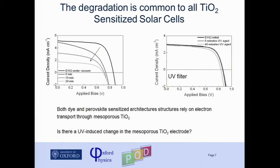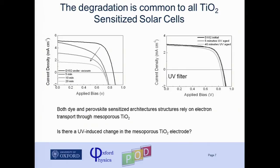We then tried the same experiment on normal traditional dye-sensitized solar cells to see if the problem is with the perovskite or the architecture itself. We see the dye-sensitized solar cells start from exactly the same problem — in 20 minutes the current drops to about a third. With a UV filter, the JV curve is much more stable. Note these are done in vacuum, and when we expose the cells back to air, wait a few hours and measure again, performance goes right back up. So this is a reversible degradation in the absence of oxygen under UV light.